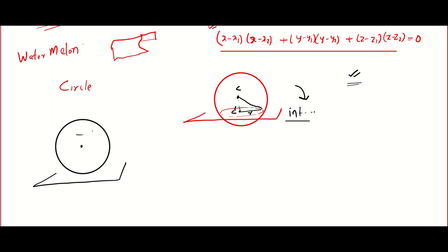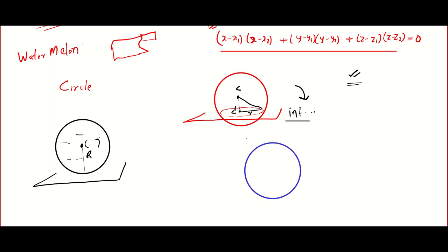When a plane becomes tangent to a sphere, the radius of the sphere and the perpendicular distance from the center to the plane will be equal — that is called the tangent condition. Another type of problem I saw is called the great circle.